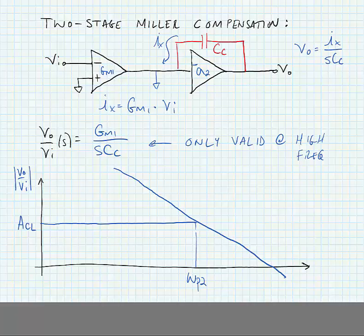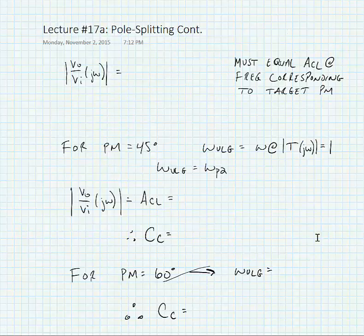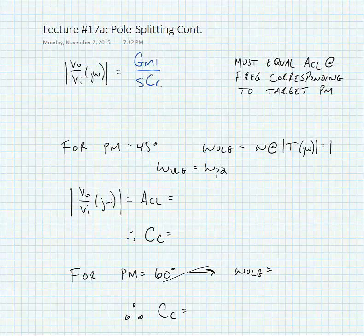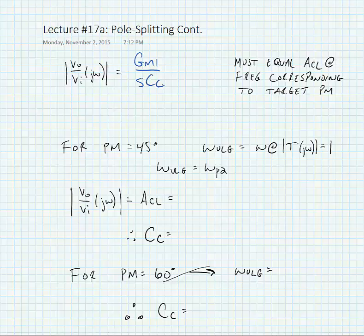In order to make this happen, what we want to do is choose what that second pole frequency is, and we're going to choose it to equal omega unity loop gain.